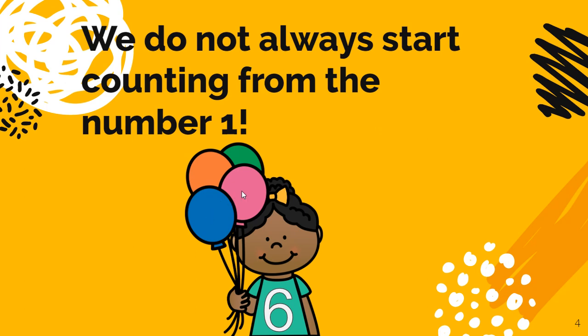One, two, three, four, five, six. So she needs two more balloons. So you see how we had to start counting from the number four and not from the number one because she had four balloons, four, five, six.